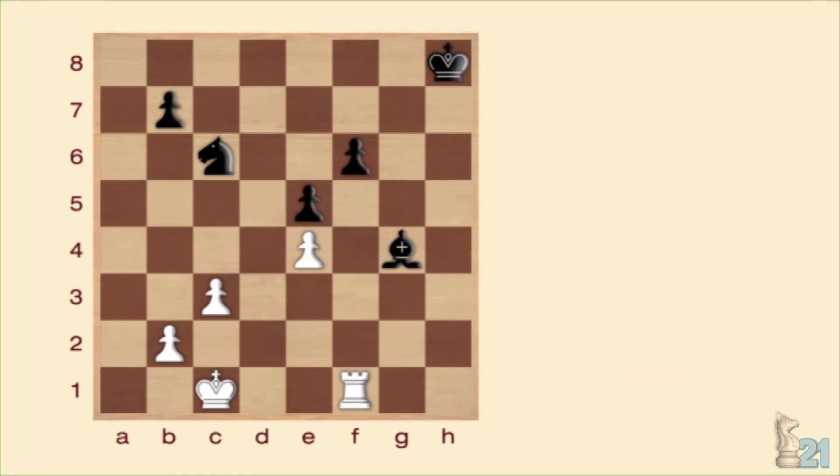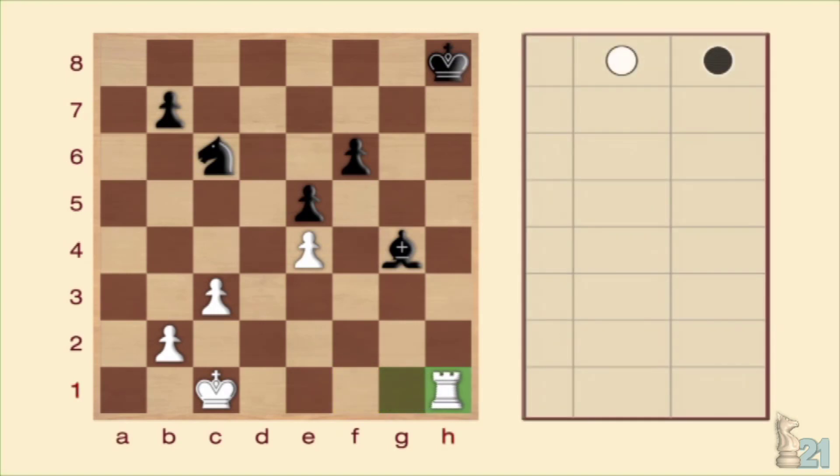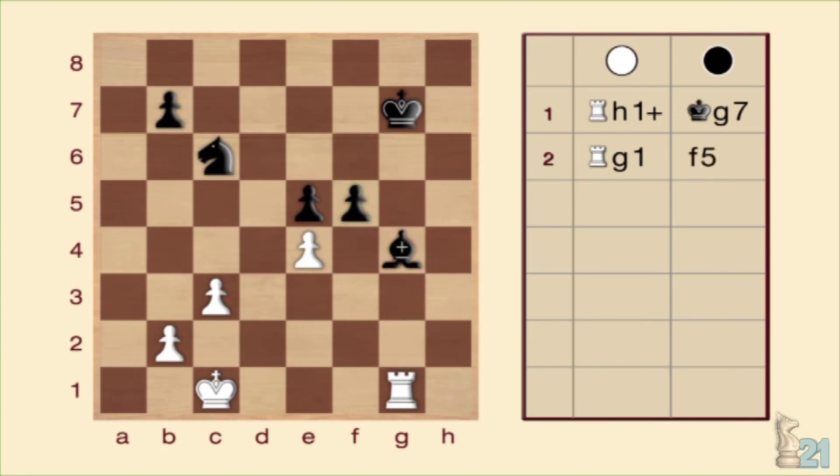Fijaos, antes de atacar el alfil, movemos torre a H1 para hacer jaque. El rey negro se mueve y ahora ya podemos amenazarlo con rayos X, moviendo la torre a G1 para inmovilizar el alfil y garantizar su captura. A esto lo llamamos clavar una pieza. El intento de defensa con el peón no sirve, puesto que capturaríamos simplemente con el peón en F5 y el alfil no puede recuperar. De esta forma, ganamos una pieza y deberíamos resolver la partida a nuestro favor.